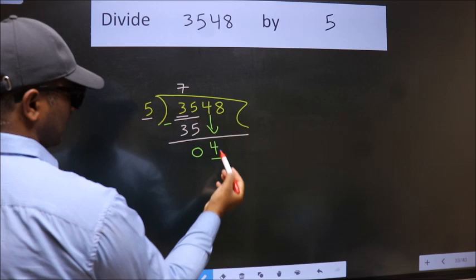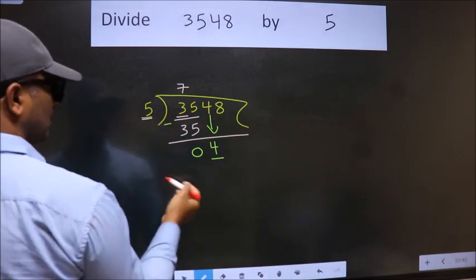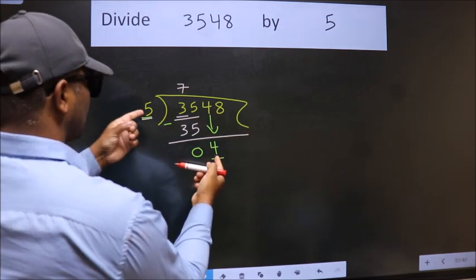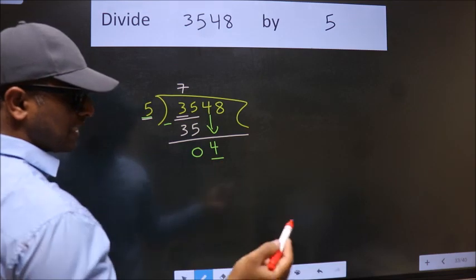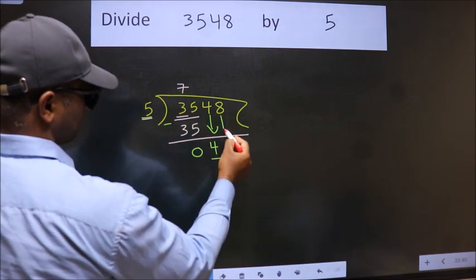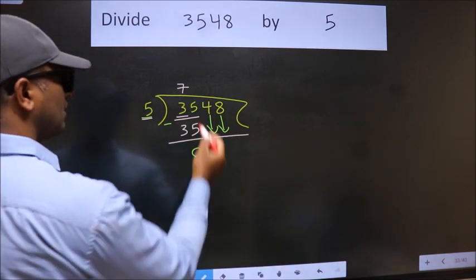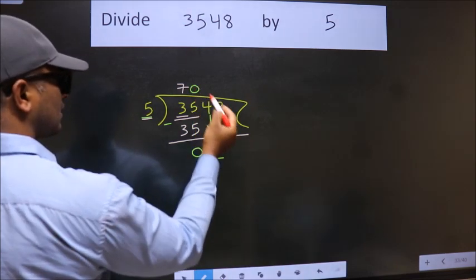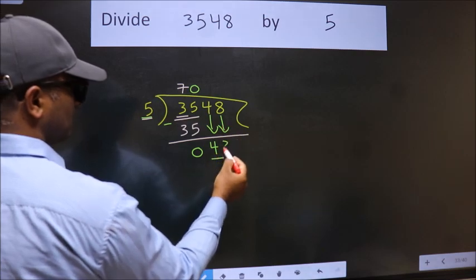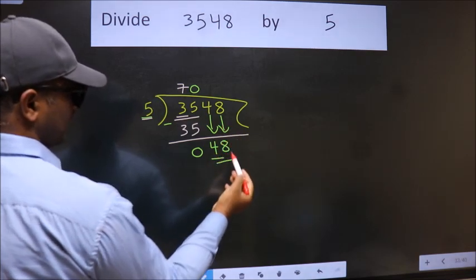Now here we have 4, here 5. 4 is smaller than 5. So we should bring down the second number. And the rule to bring down the second number is put 0 here. Then only we can bring this number down. So, 48.